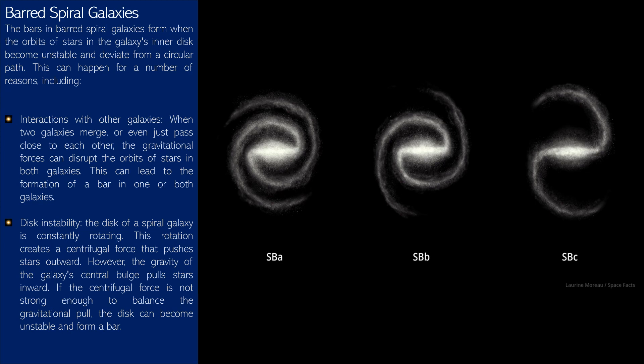Disc instability: the disk of a spiral galaxy is constantly rotating. This rotation creates a centrifugal force that pushes stars outward. However, the gravity of the galaxy's central bulge pulls stars inward. If the centrifugal force is not strong enough to balance the gravitational pull, the disk can become unstable and form a bar.